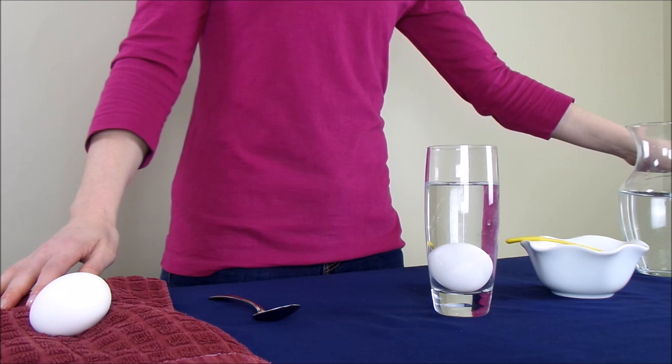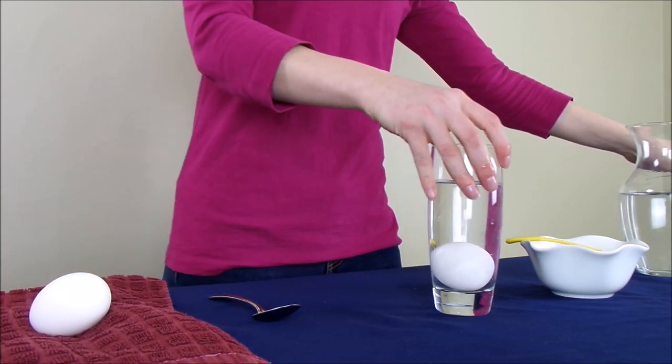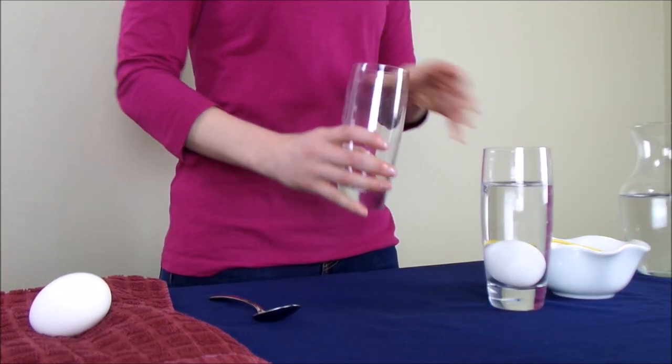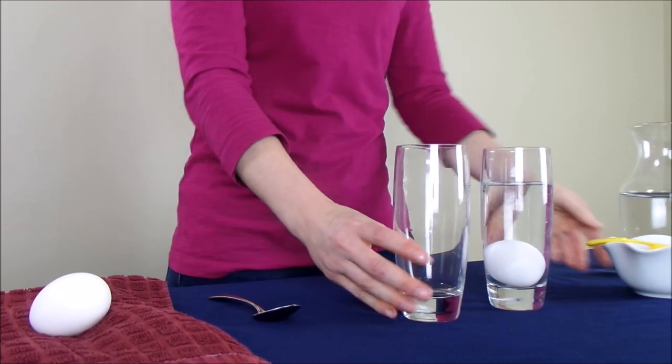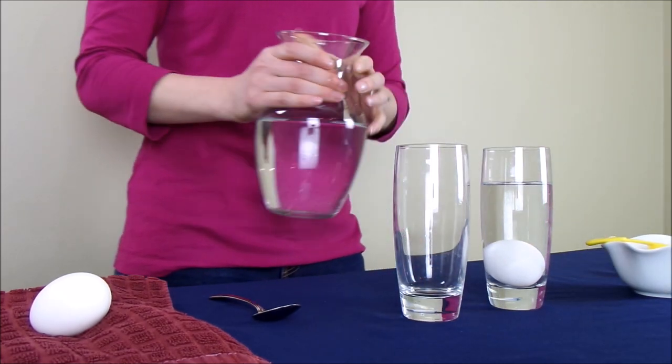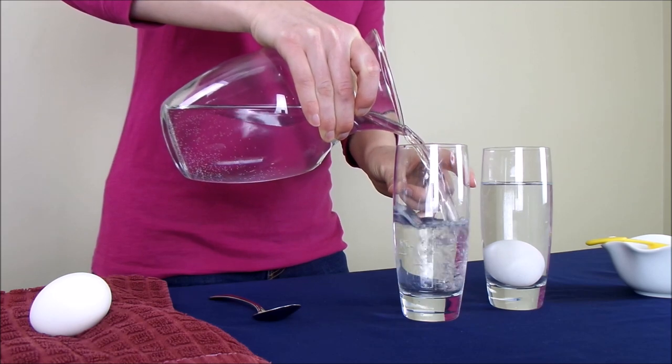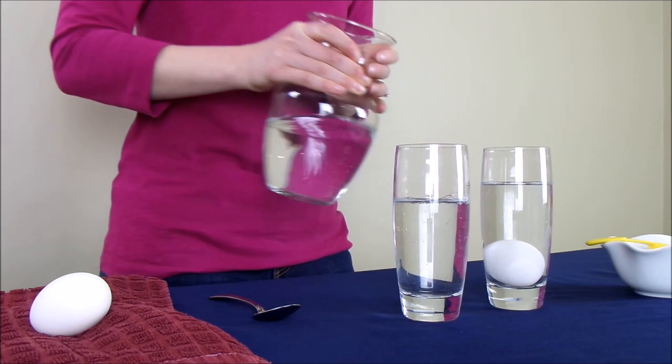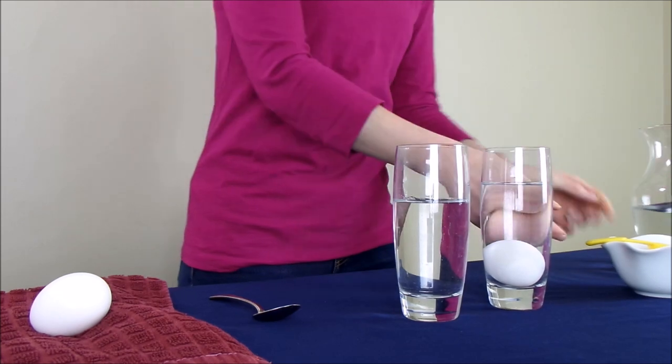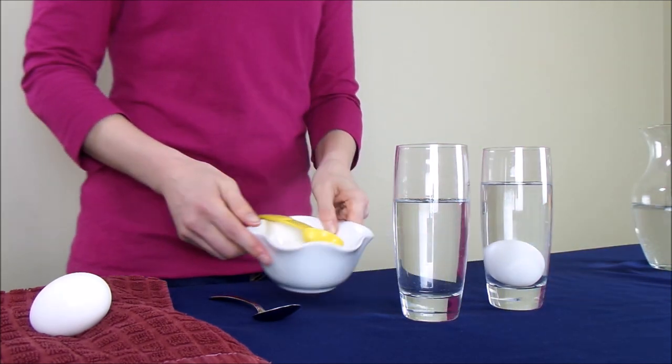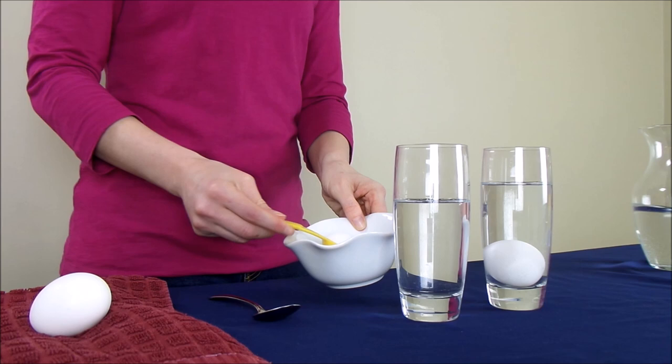But this science experiment is called the Floating Egg. So what we're going to do this time is take an empty glass and again fill it about three quarters of the way full of water. But this time we're going to add some salt, about three tablespoons.